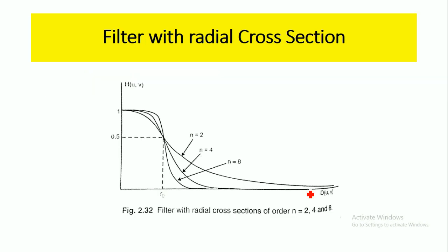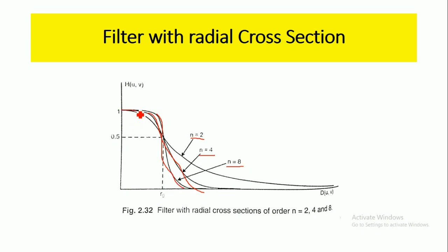Here is the filter response with the radial cross section. For n equal to 2, the filter response will be like this. For n equal to 4, the filter response is like this. And for n equal to 8, the filter response is like this. So as the order increases, the Butterworth low pass filter exhibits ideal low pass filter characteristics.